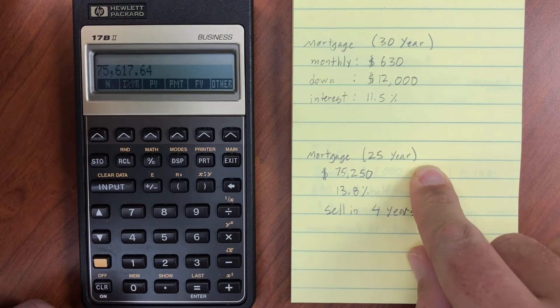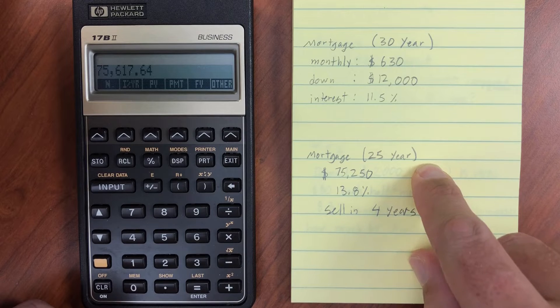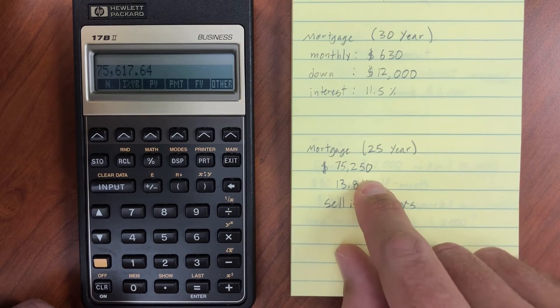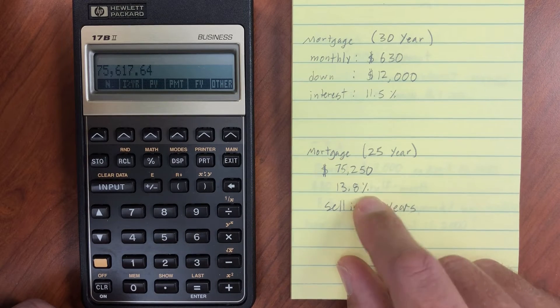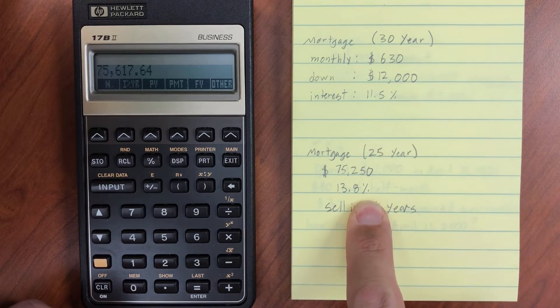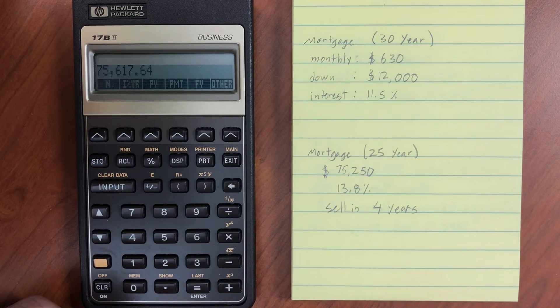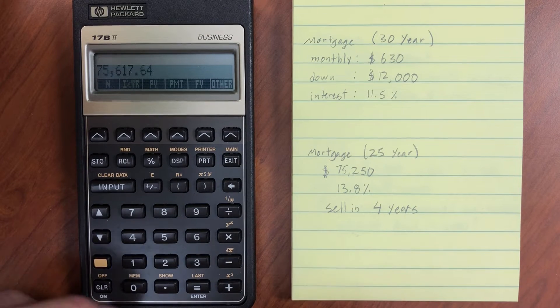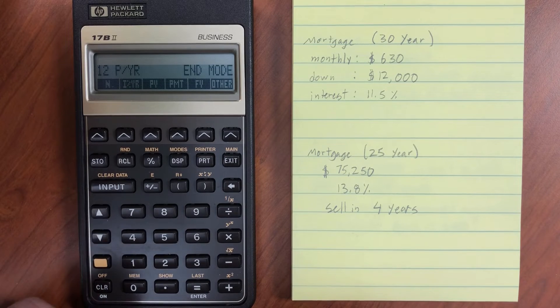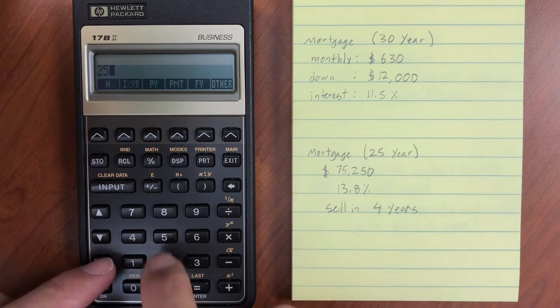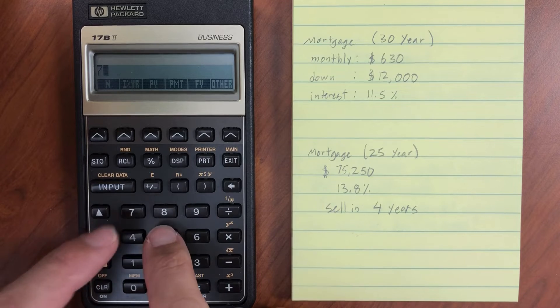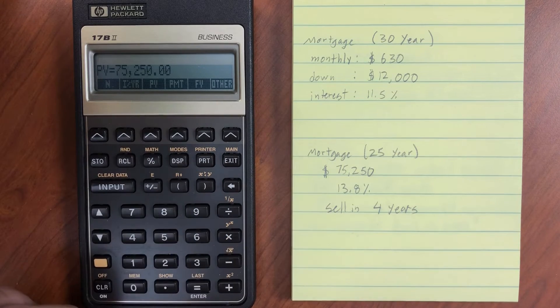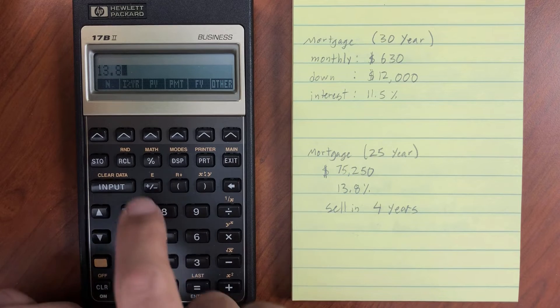Let's try another thing. So this is a balloon mortgage. So we're going to have a 25-year mortgage. We're going to afford this much. We'll pay that much. Take out that much in a loan. Percentage rate is still very high. And then in four years, we're going to sell it. So let's go ahead and clear our data. I have 25 years. So shift N. 300 periods. I have a present value of 75,250. 13.8% interest rate.